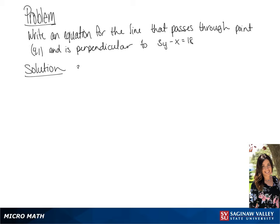We want to write the equation for the line that passes through point (4,1) and is perpendicular to 3y minus x equals 18.